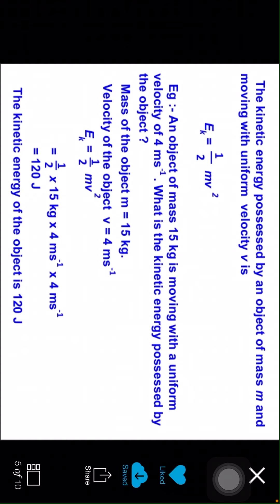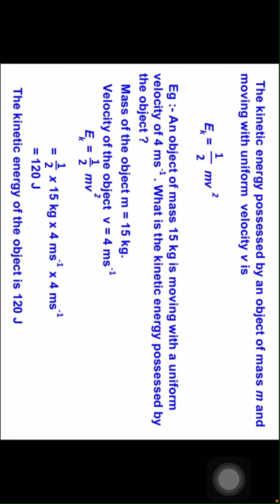Example: an object of mass 15 kg is moving with a uniform velocity of 4 meters per second. What is the kinetic energy possessed by the object? Mass of the object m equal to 15 kg. Velocity of the object v equal to 4 meters per second. Then Ek is equal to half into mv squared. Substituting the values: Ek equal to half into 15 kg into 4 squared. The kinetic energy of the object is 120 joules.